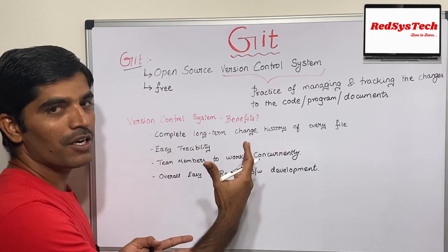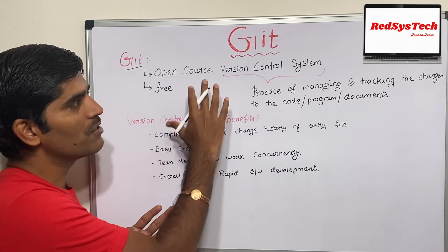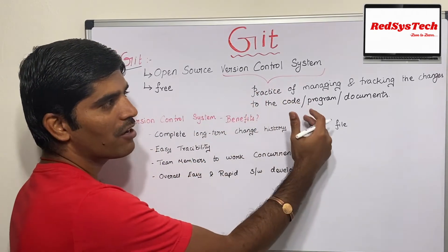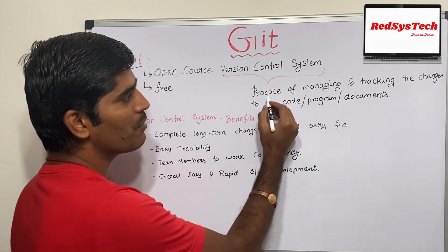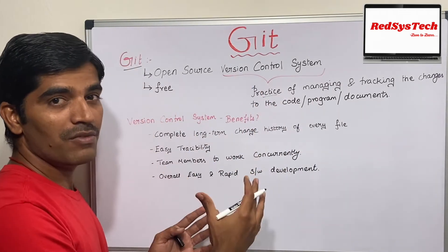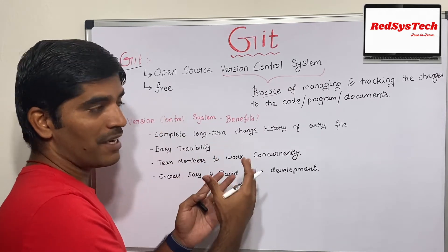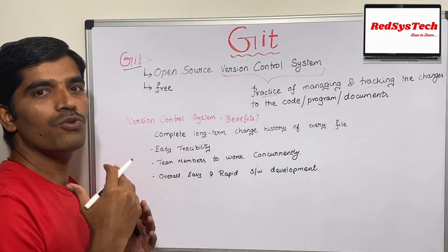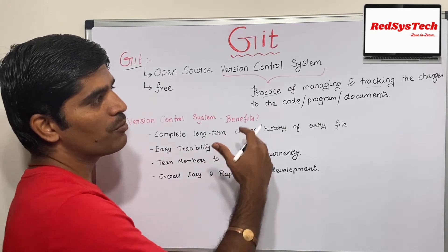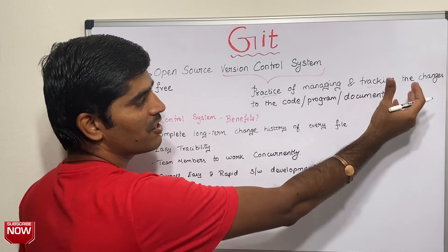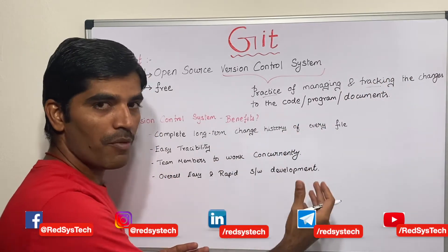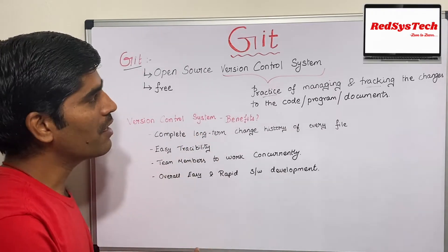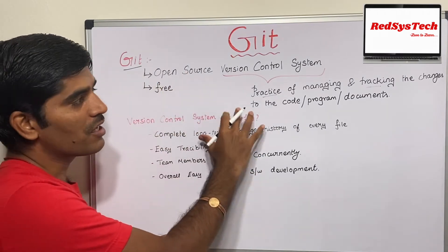Now, version control system — what does that mean? A version control system is nothing but a practice of managing and tracking the changes to the code, programs, or documents. Whatever changes you make in your files while developing code, those changes have to be tracked. Even bid documents — people track all changes. So Git is a tool used for managing and tracking those changes.